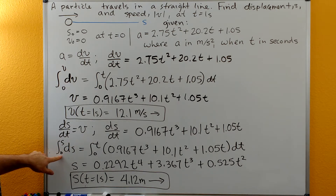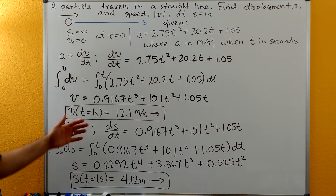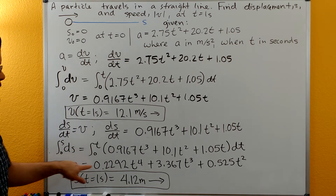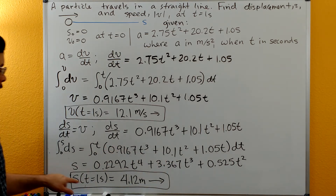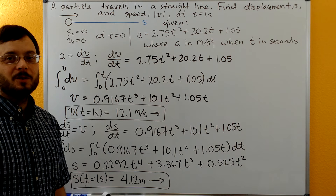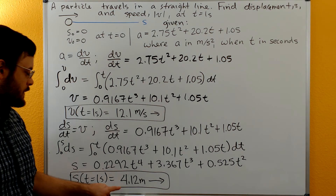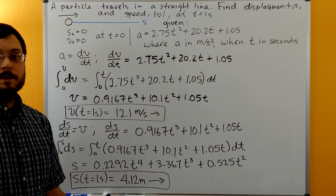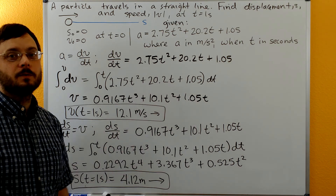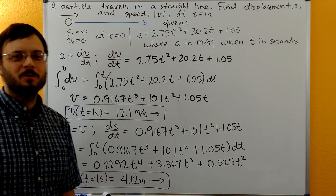We plug in the limits for t from zero to t, and s from zero to s. The lower limits zero out both sides, so we wind up with s as a function of t. Plugging in one second gives us our s value — a positive result, meaning the displacement is also to the right. Thanks for watching.